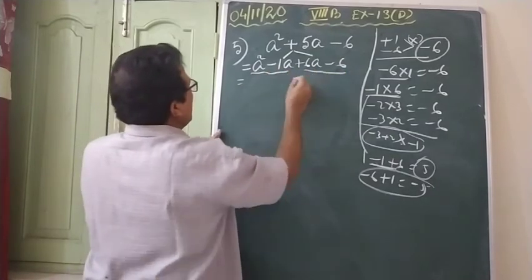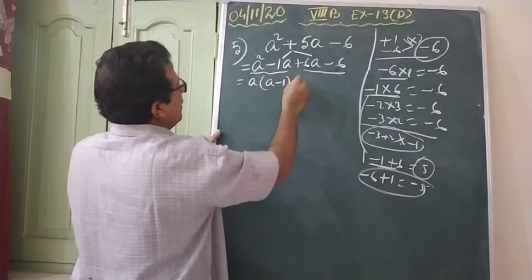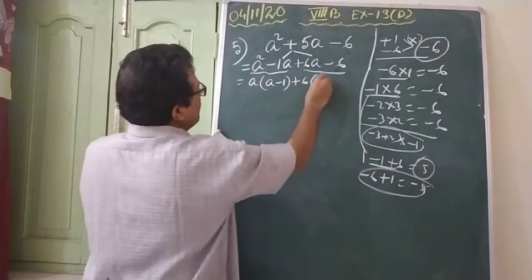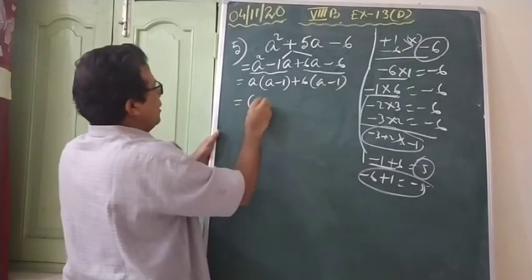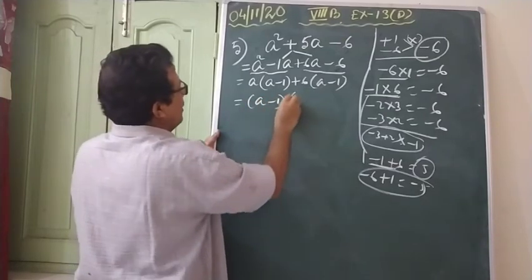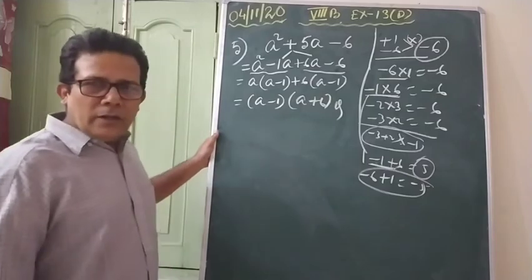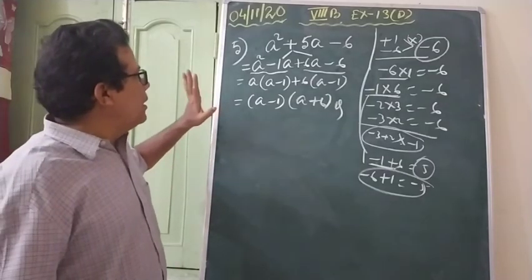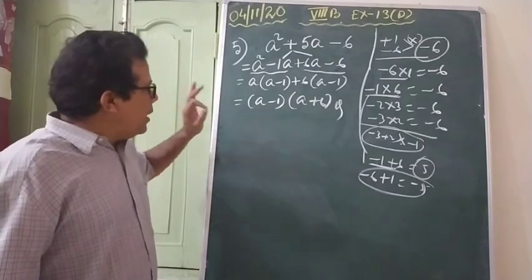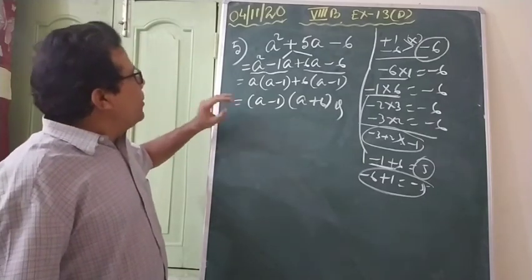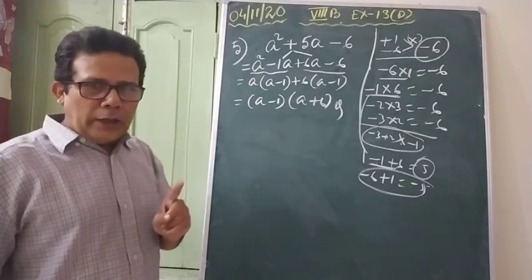Now from here, take common a from the first two: a minus 1. Take common plus 6 from the last two: a minus 1. Both bracket terms — a minus 1 — are the same. So the answer is (a minus 1)(a plus 6). I hope I made it clear to you. Again, if you have any doubt or any problem, please text me, and you try to solve on your own. Thank you.